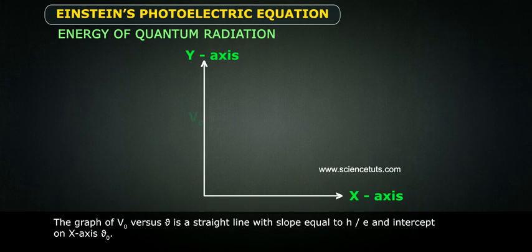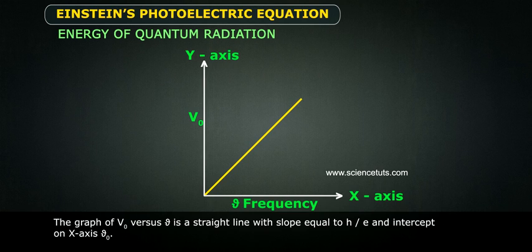The graph of V₀ versus ν is a straight line with slope equal to h/e and intercept on x-axis.